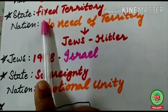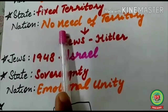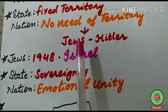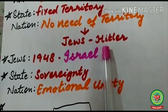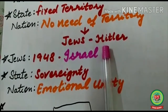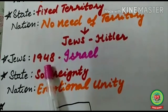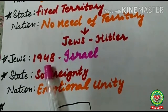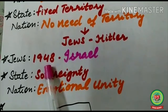A nation can survive even without a territory. For example, consider the Jews — remember how Hitler treated them in the concentration camps. At that time, the Jews had an identity, meaning they had a nation, but they did not have a territory and therefore did not have a state. In 1948, they got the definite territory of Israel, and now the Jews have both a nation and a state.